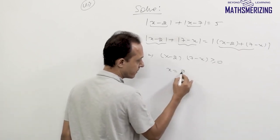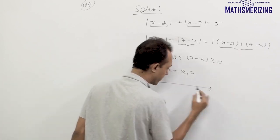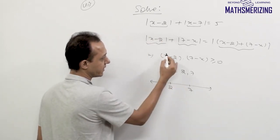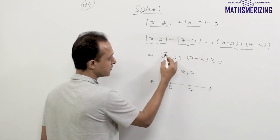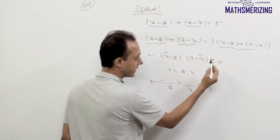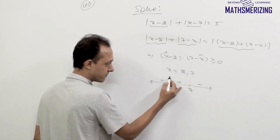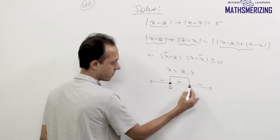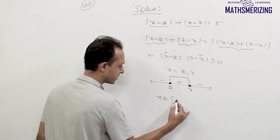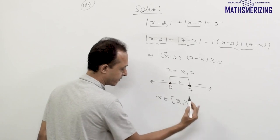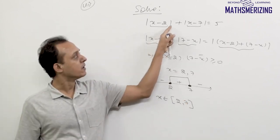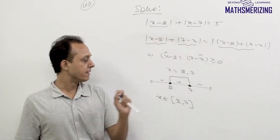The roots are 2 and 7. Plotting on the number line, the sign analysis gives minus, plus, minus — and we need ≥ 0, so we take the plus region. The solution is x ∈ [2, 7]. So if x lies between 2 and 7, |x - 2| + |x - 7| = 5.